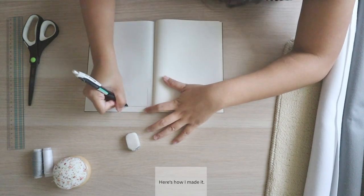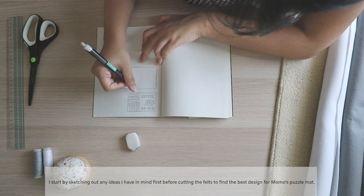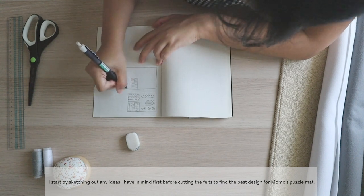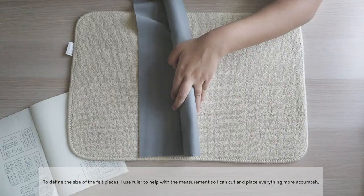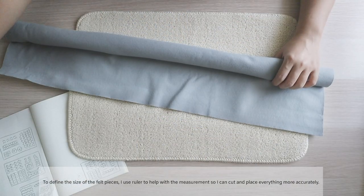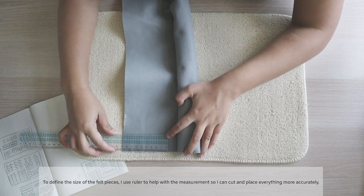Okay, so here's how I made it. I'll start by sketching out any ideas I have in mind first before cutting the felt to find the best design for Momo's puzzle mat. To define the size of the felt pieces, I use a ruler to help with the measurements so I can cut and place everything more accurately.